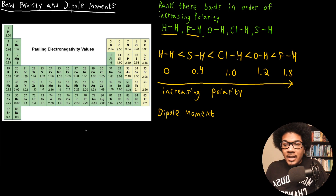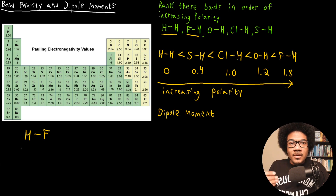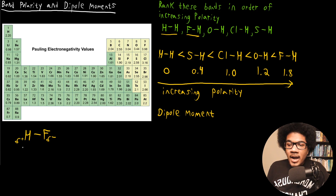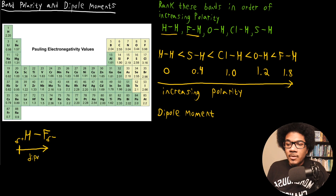For example, let's take HF. What we usually do to denote the dipole moment is draw a little arrow that points towards the negative end of the dipole. We know that for HF, there's going to be a partial negative on the fluorine and a partial positive on the hydrogen. So we draw this arrow where the arrow points towards the negative end of the dipole. HF is going to have a dipole moment that points towards the fluorine atom.